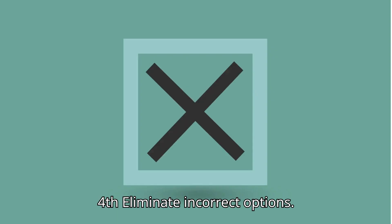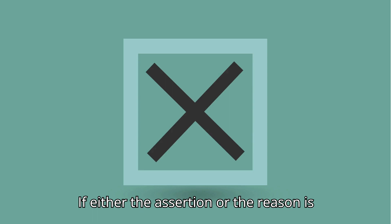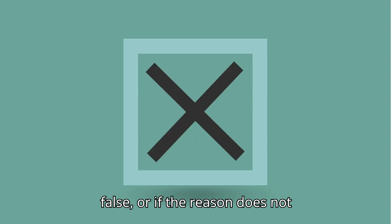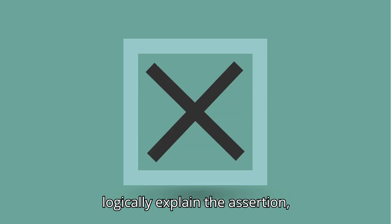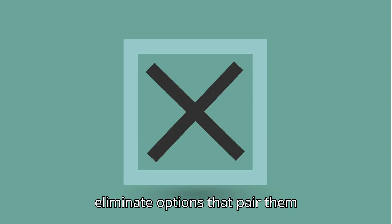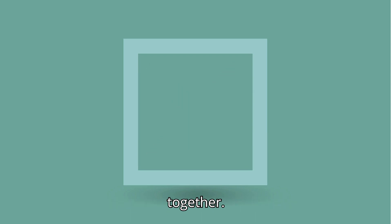Fourth, eliminate incorrect options. If either the assertion or the reason is false, or if the reason does not logically explain the assertion, eliminate options that pair them together.